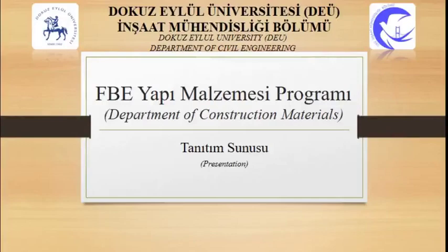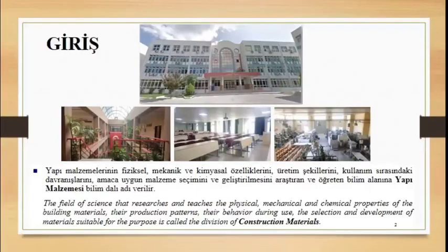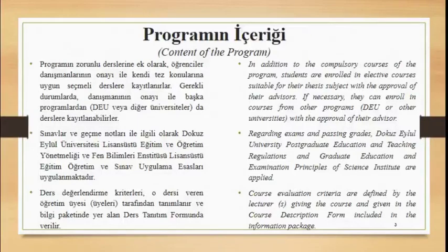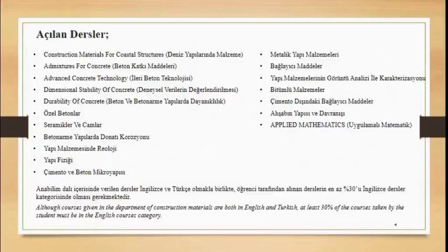9 Eylül Üniversitesi Fen Bilimleri Enstitüsü Yapı Malzemesi Programı: Yapı malzemelerinin fiziksel, mekanik ve kimyasal özelliklerini, üretim şekillerini, kullanım sırasındaki davranışlarını, amaca uygun malzeme seçimini ve geliştirilmesini araştıran ve öğreten bilim alanına yapı malzemesi bilim dalı adı verilir. Öğrenciler zorunlu derslerine ek olarak 9 Eylül Üniversitesi bünyesindeki programlardan ya da diğer üniversitelerden ders kayıtlanabilirler. Ana bilim dalı içerisinde verilen dersler İngilizce ve Türkçe olmakla birlikte, öğrenci tarafından alınan derslerin en az %30'u İngilizce dersler kategorisinde olması gerekmektedir.